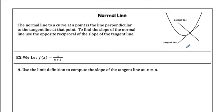We could talk about normal line — the picture is right there but we're not going to do it yet. So a tangent line shows you the exact same slope at the spot; normal line is another name for a perpendicular line. So a normal line has the exact opposite reciprocal slope.